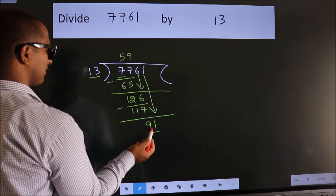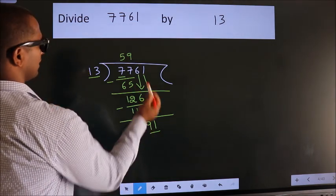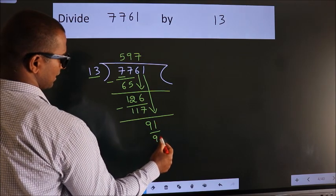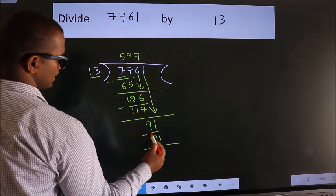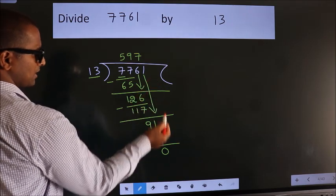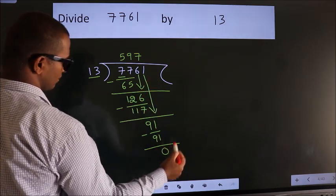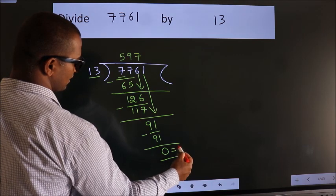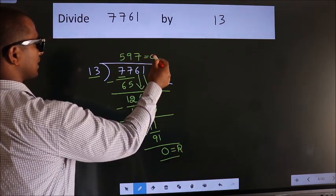When do we get 91 in 13 table? 13 sevenths, 91. Now we subtract. We get 0. No more numbers to bring it down. So we stop here. This is our remainder. This is our quotient.